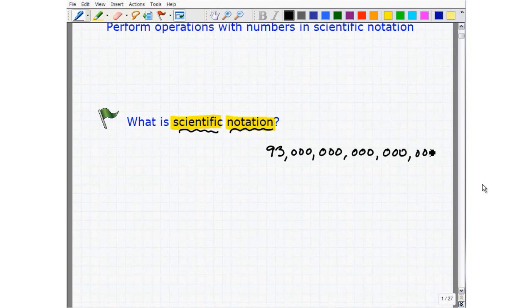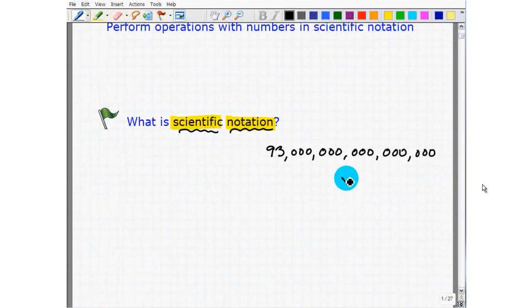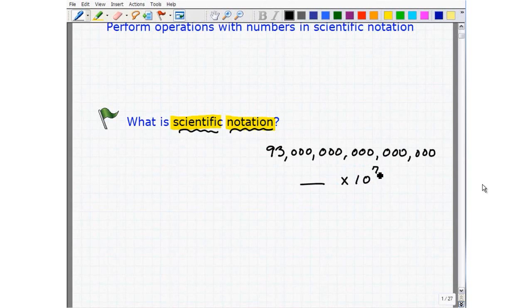So there's got to be a better way to handle some very large numbers and very small numbers that we deal with in science. And a better way is what we're going to learn in this lesson, and that's scientific notation. And it involves the power of 10. So that's going to be some number times 10 to some power. Here I'll just put 7, for example.